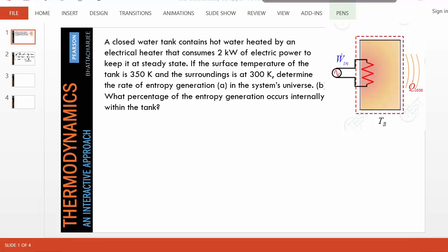In this problem, water is contained in a tank and it's losing heat. To keep the water steady at a certain temperature, 2 kilowatts of electrical power is needed. The surface temperature of the tank and the surrounding temperatures are given, and we are to find the entropy generation inside the system and outside the system.